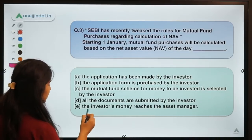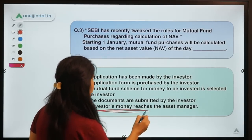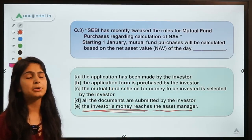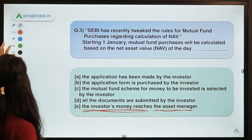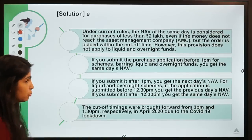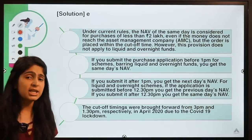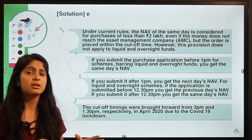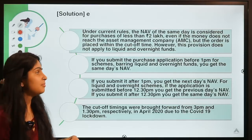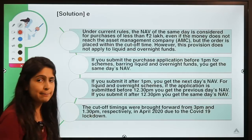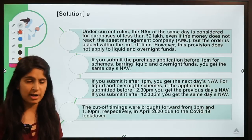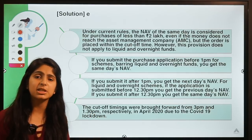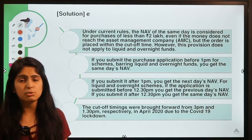The new rule considers the day when the investor's money reaches the AMC — Asset Management Company. That particular day's NAV is used for calculation. So if you're investing today and want today's NAV to apply, you must ensure both that the application is submitted and that your money reaches the asset manager on that same day.